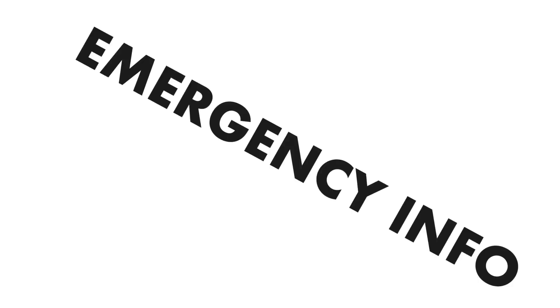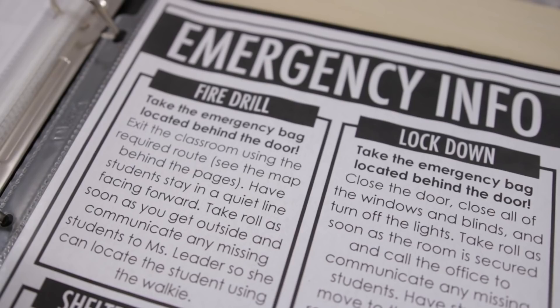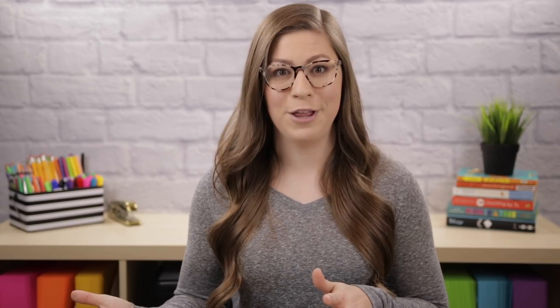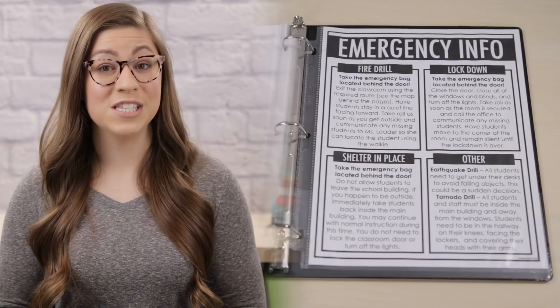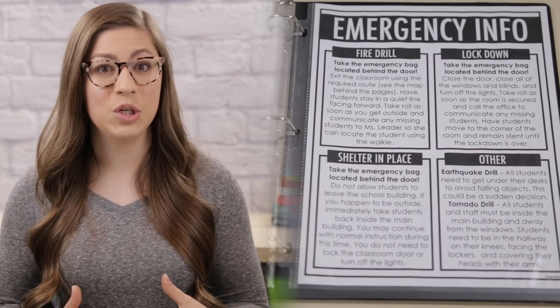My final page is emergency information. I actually put this at the very back of the binder with a red sticky tab so the substitute can find it quickly — if it's near the front but a couple pages back, it gets tricky to find, whereas if it's the very last page they can flip directly to it. This is where you give directions for any drills that may occur: fire drills, tornado drills, shelter in place, and lockdowns. You also want to include what to do if it's an actual emergency — whether they need to take a specific bag or the sub binder with them. If your school uses maps for emergency routes, include copies of those maps directly in the sub binder.